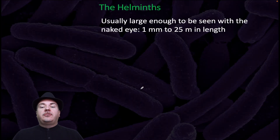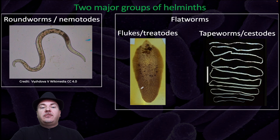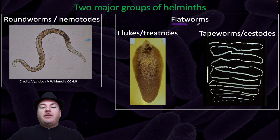The Helminths are usually large enough to be seen with the naked eye, ranging from 1 mm to 25 m in length. The two major groups of Helminths are the roundworms, or nematodes, and the flatworms, which are broken down into the flukes, or trematodes, and tapeworms, or cestodes.